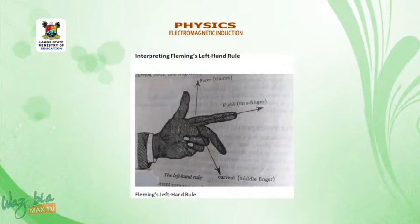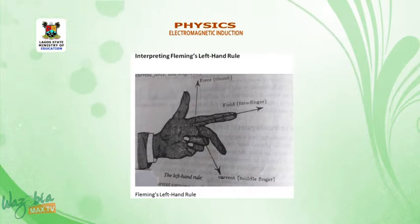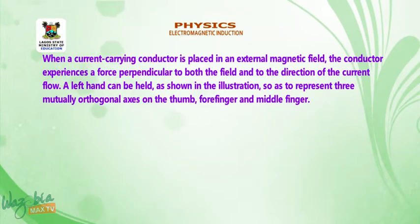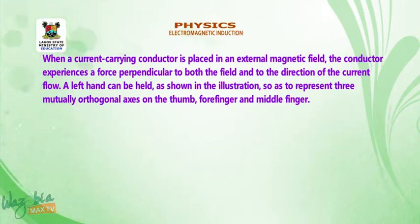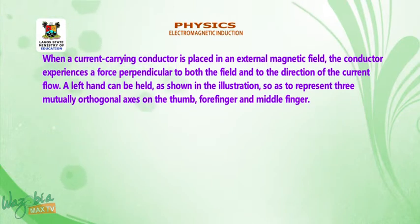Interpreting Fleming's left hand rule. Consider the diagram shown above. The forefinger indicates the direction of the magnetic field. The middle finger indicates the direction of the current. And the thumb represents the direction of the motion or force.